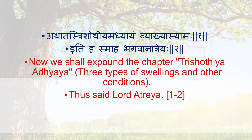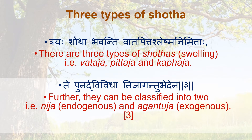Now we shall expand the chapter Trishodhiyya Adhyaya: Three Types of Swelling and Other Conditions. Thus said Lord Atreya: there are three types of Shotha (swelling) — Vataja, Pittaja, and Kaphaja. Further, they can be classified into two: Nija (Endogenous) and Agantuja (Exogenous).